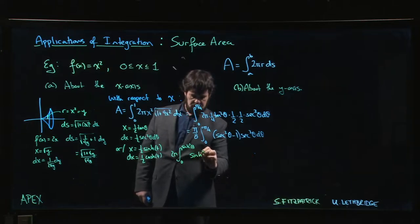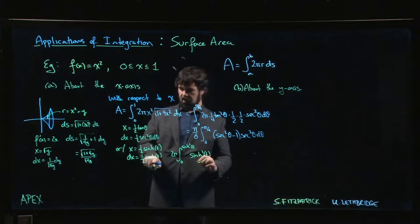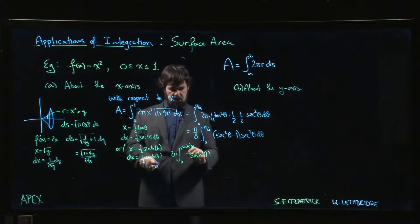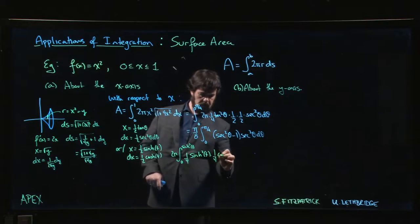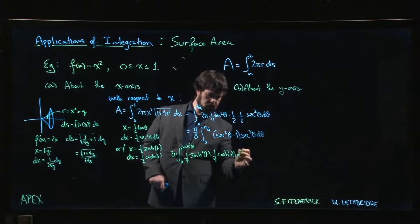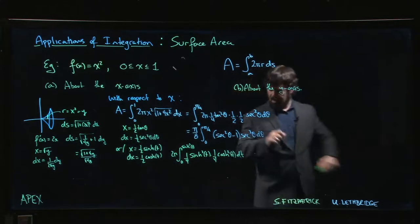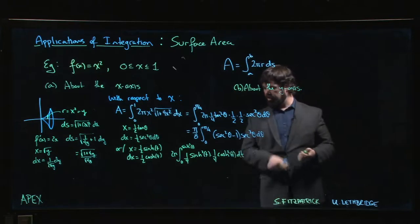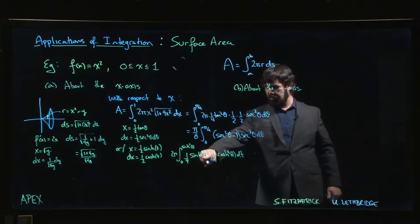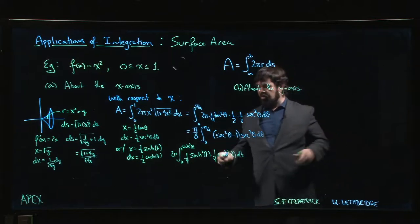And then x squared becomes hyperbolic sine squared t. This is going to be hyperbolic cos times another hyperbolic cos, and there's a one over four, one over four. That would be the alternative integral. Aside from the fact that we always forget our hyperbolic identities, that's a little bit easier to deal with because you do a power reduction formula here, power reduction formula there, it's not that bad.